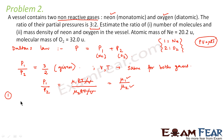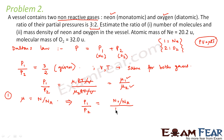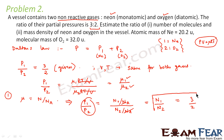The first part asks for the ratio of number of molecules. From the definition of number of moles, μ = N/Nₐ. So μ₁/μ₂ = (N₁/Nₐ)/(N₂/Nₐ) = N₁/N₂. Since P₁/P₂ = μ₁/μ₂ = N₁/N₂, and P₁/P₂ is given as 3:2, the ratio of number of molecules of neon to oxygen is 3:2.